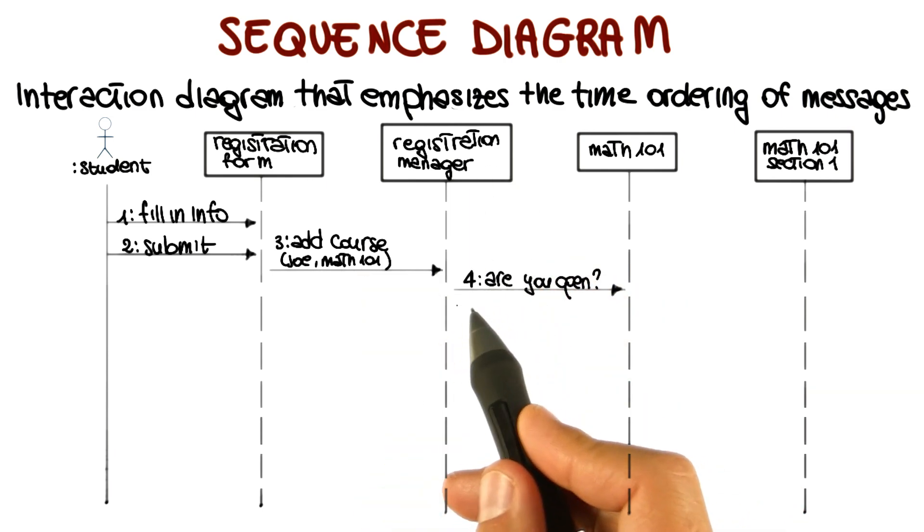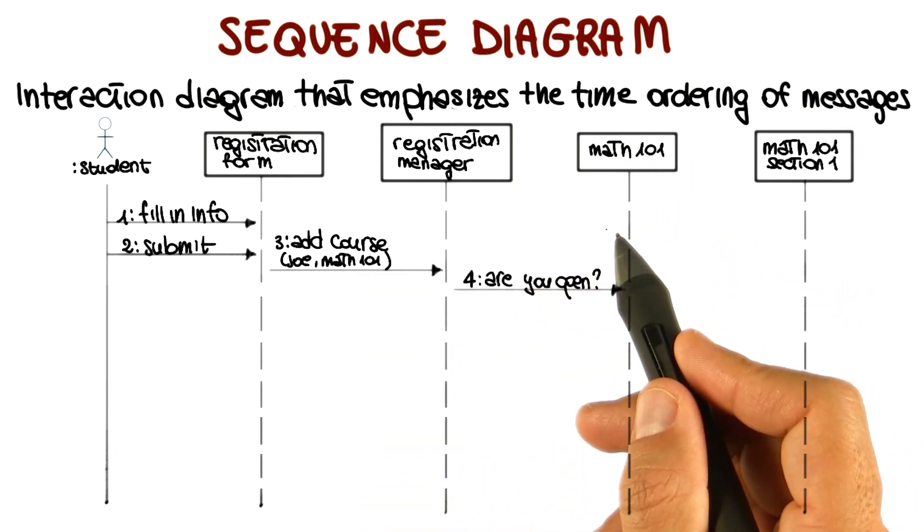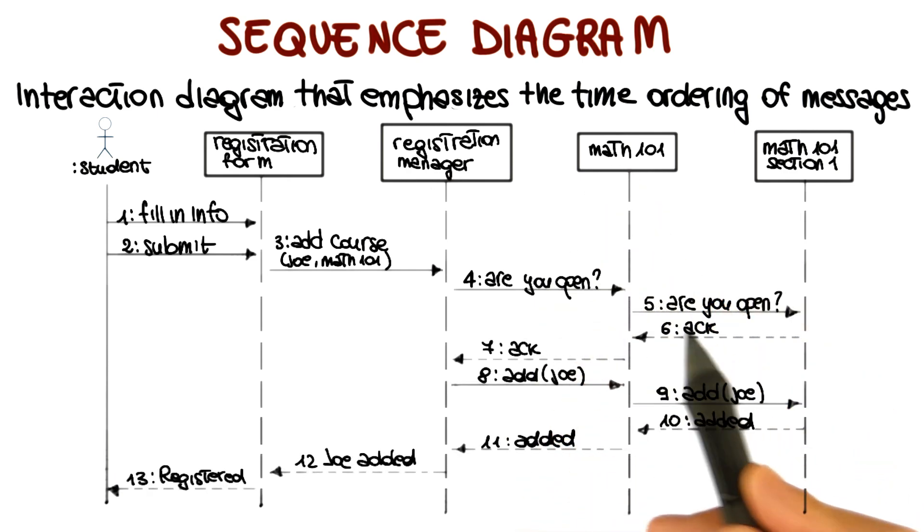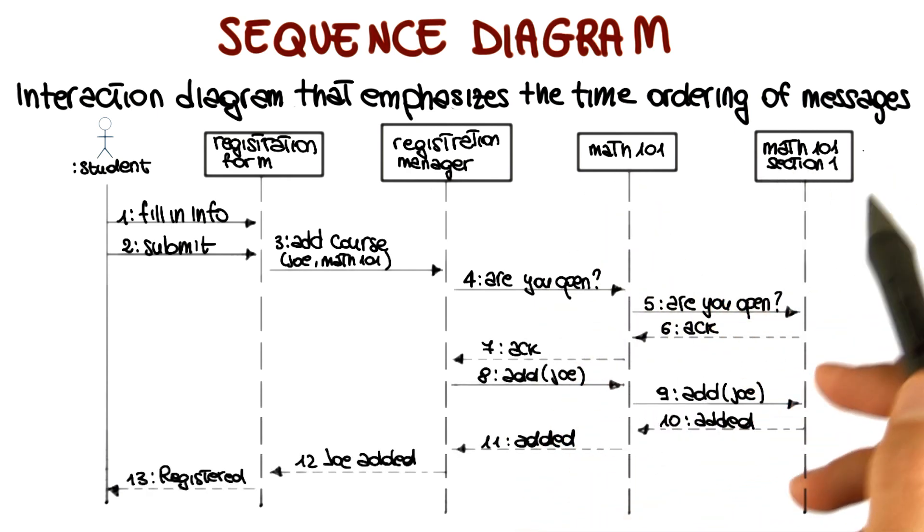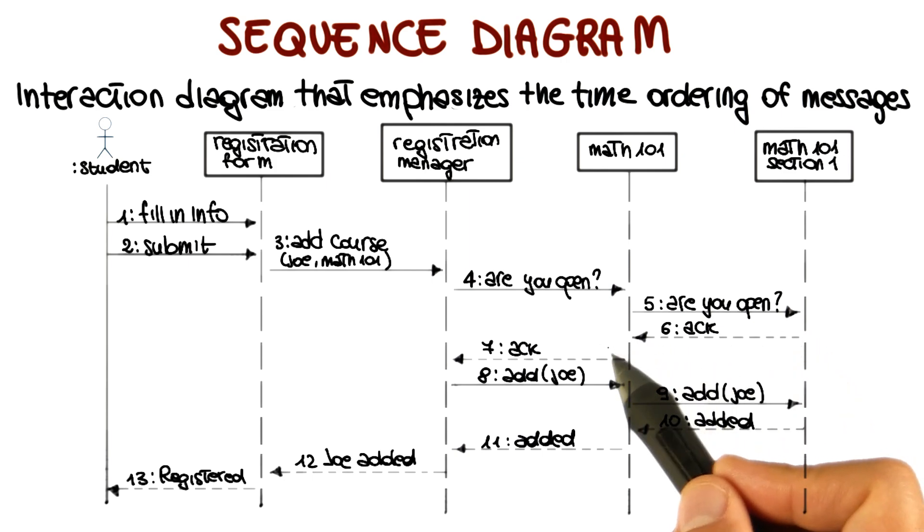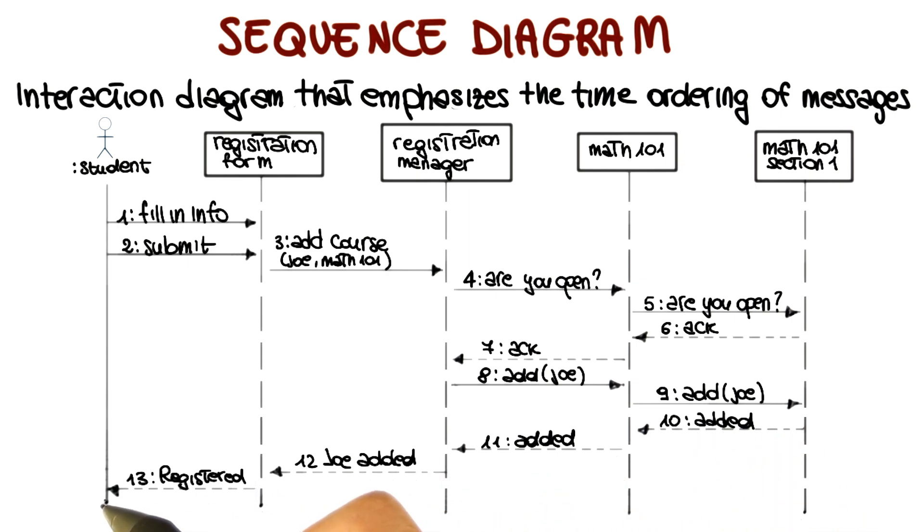Then the registration manager will ask the Math 101 course whether it accepts the registrations, and the interaction will continue. So Math 101 will actually check for a specific offering. If everything goes fine, it will receive an ack, send back the ack to the registration manager, and so on, until at the end Joe will be registered for Math 101.